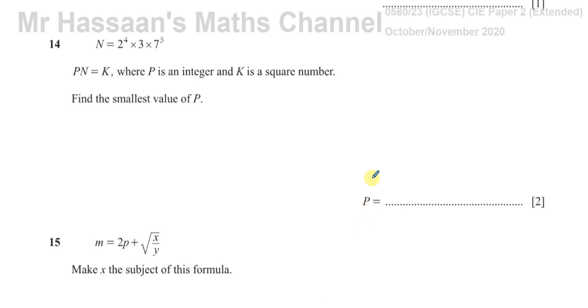Okay, welcome back. This is Mr. Hassan's Math Channel. I'm now answering the October-November 2020 IGCSE Cambridge Paper 2 Variant 3. This question I've got to know is number 14.